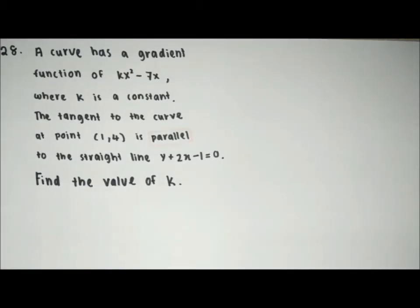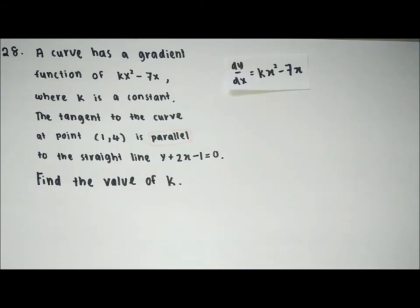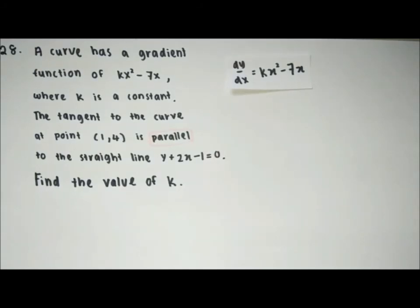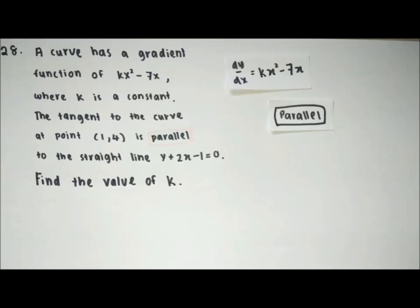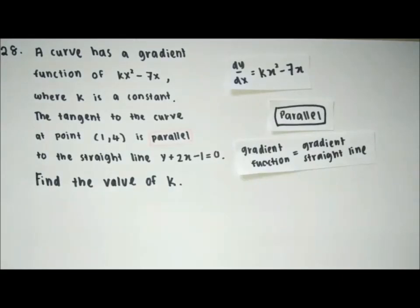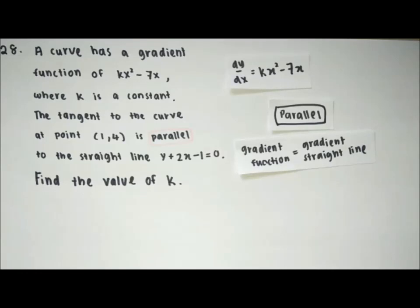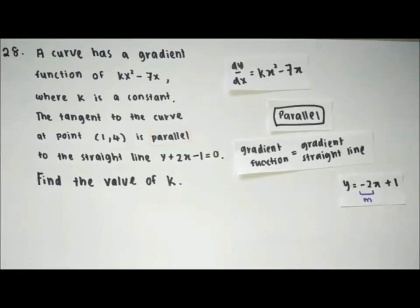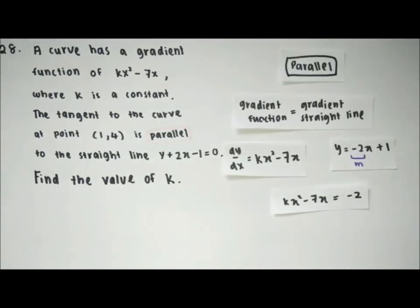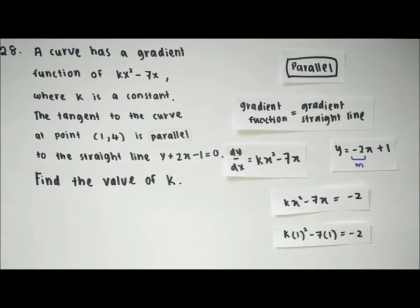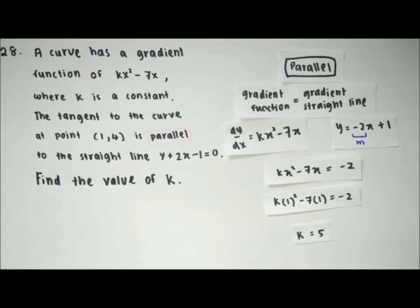A curve has a gradient function of kx squared minus 7x, where k is a constant, so dy over dx equals kx squared minus 7x. The tangent to the curve at point (1, 4) is parallel to the straight line y plus 2x minus 1 equals 0. We need to find the value of k. Since the tangent is parallel to the straight line, the gradient function equals the gradient of the straight line, which is negative 2. Setting kx squared minus 7x equal to negative 2 and inserting x equals 1, we get k equals 5.